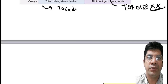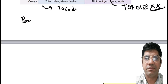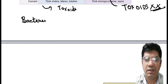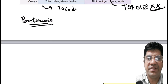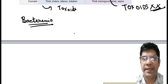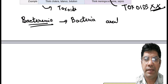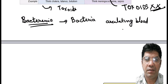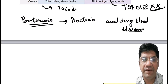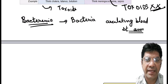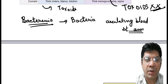Another terminology you should know is bacteremia. Bacteremia refers to the presence of bacteria circulating in the bloodstream — bacteria from a local infection or another source have entered the bloodstream, but it does not necessarily imply a widespread systemic infection.